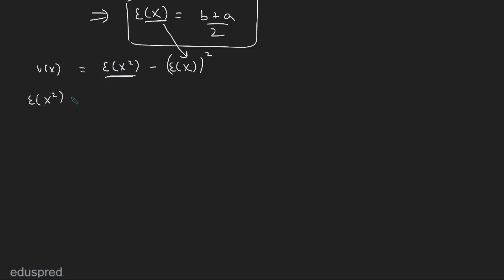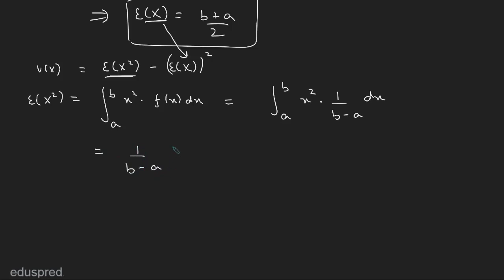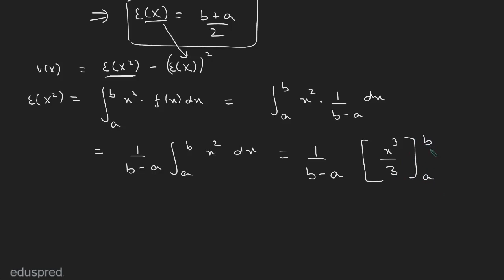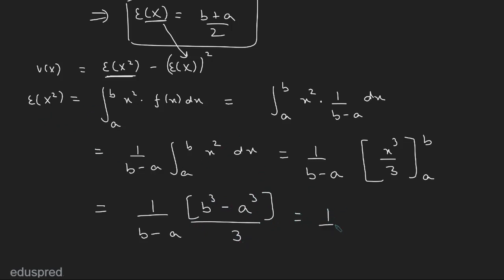The expected value of X squared is the integral from a to b of x squared multiplied by f(x) dx. Since the PDF is 1 divided by b minus a, we get the integral of x squared times 1 divided by b minus a dx. Taking the constant out, and integrating x squared gives x cubed divided by 3. Substituting the limits gives 1 divided by b minus a times b cubed minus a cubed divided by 3.